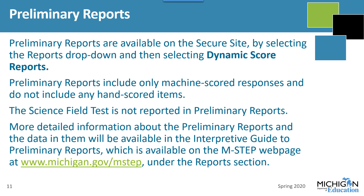Preliminary reports are based on the prior year's proficiency cuts. Since the science test was a field test last year, there are no proficiency cuts from last year. Science will be included on preliminary reports next year, and there will be science results when final reports are released. More detailed information about the preliminary reports will be available in the Interpretive Guide to Preliminary Reports on the M-STEP webpage at www.michigan.gov/mstep under the Reports section. Watch the spotlight for when that becomes available.